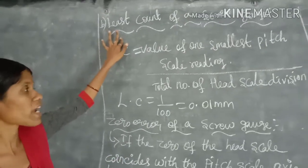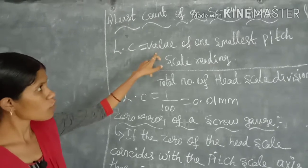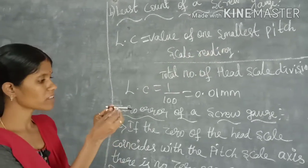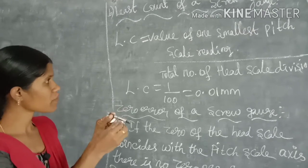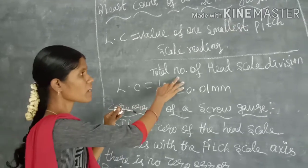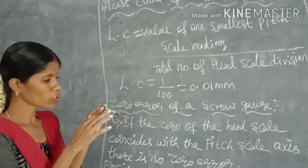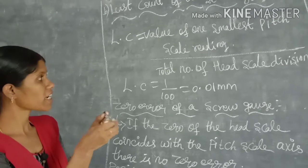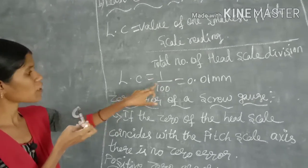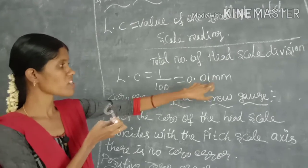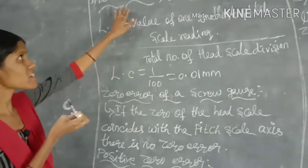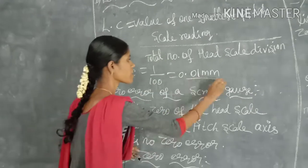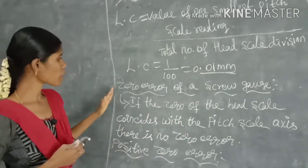The least count of the screw gauge equals the value of one smallest pitch scale reading divided by the total number of head scale divisions. Since there are 100 divisions on the head scale, least count = 1/100 = 0.01 millimeter.